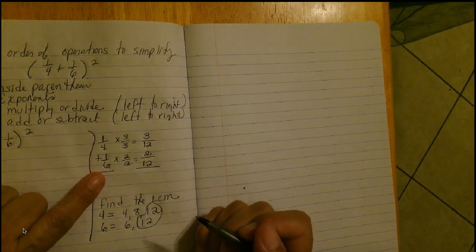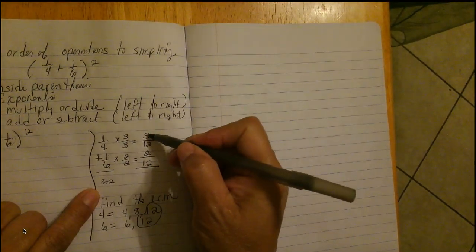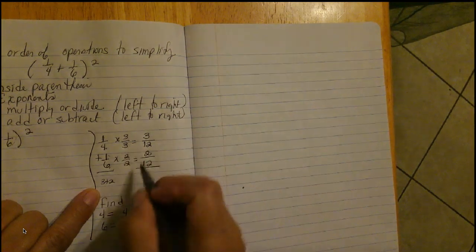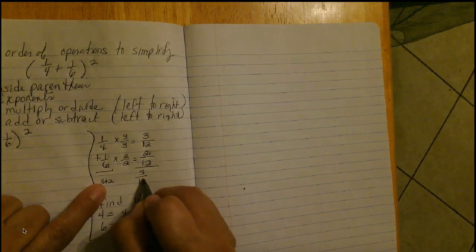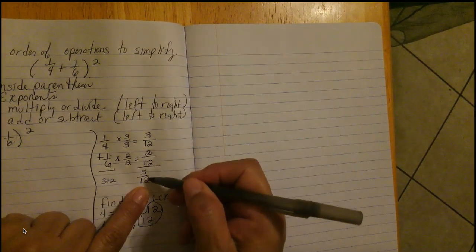Now, I'm ready to add the numerator. I'm going to add the three plus the two. So, three plus two is five, keeping our denominator, twelve.